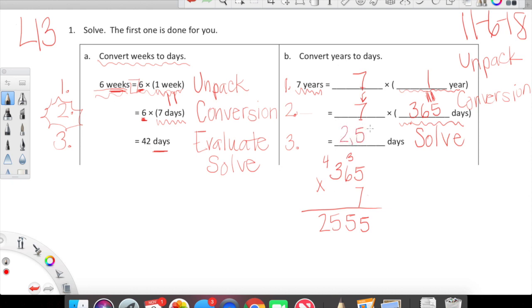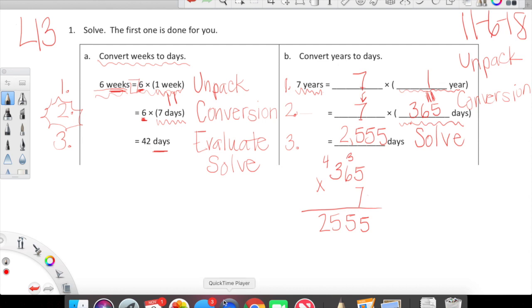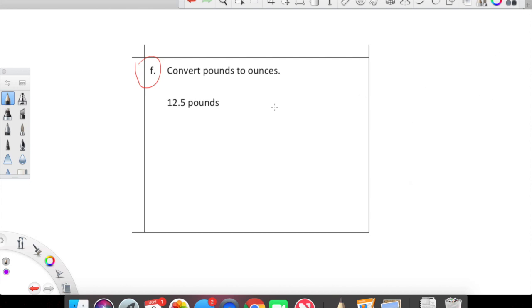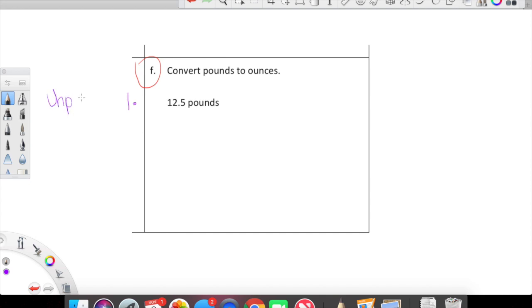So as it happens, 7 years is equal to 2,555 days. Wow, who knew! I grabbed another problem here that does not have all of the support as our first two examples did. Let's first read what's going on. We're being asked to convert pounds to ounces and we're starting with 12.5 pounds. That first bit of information is going to be a part of our first line.